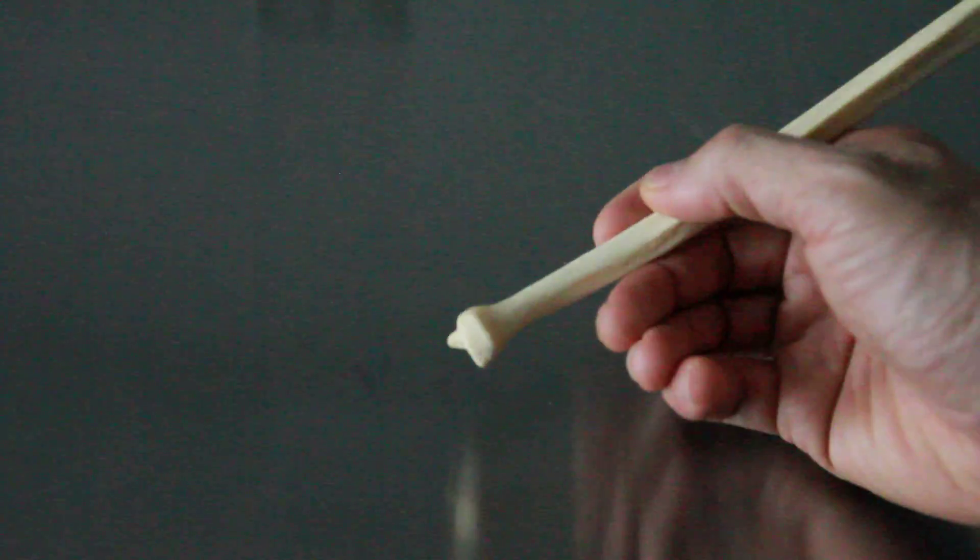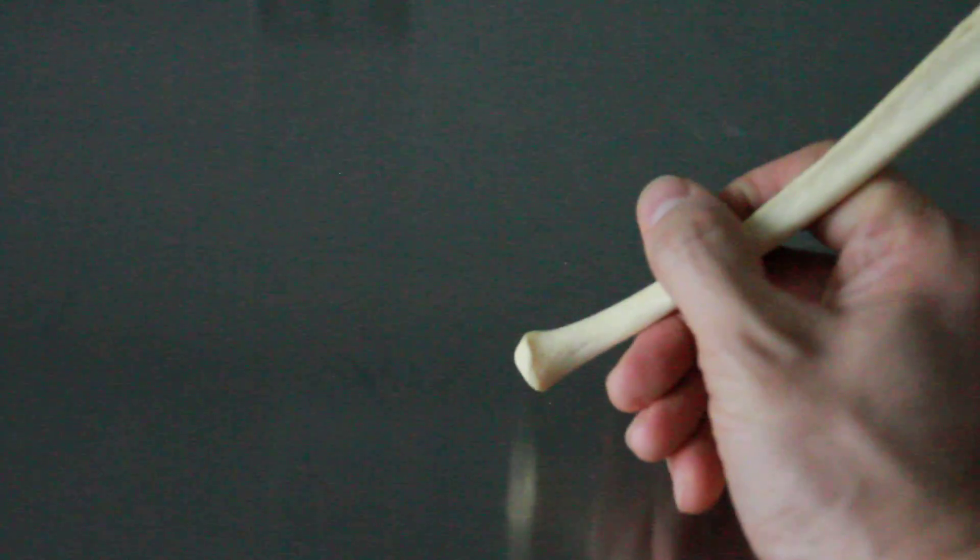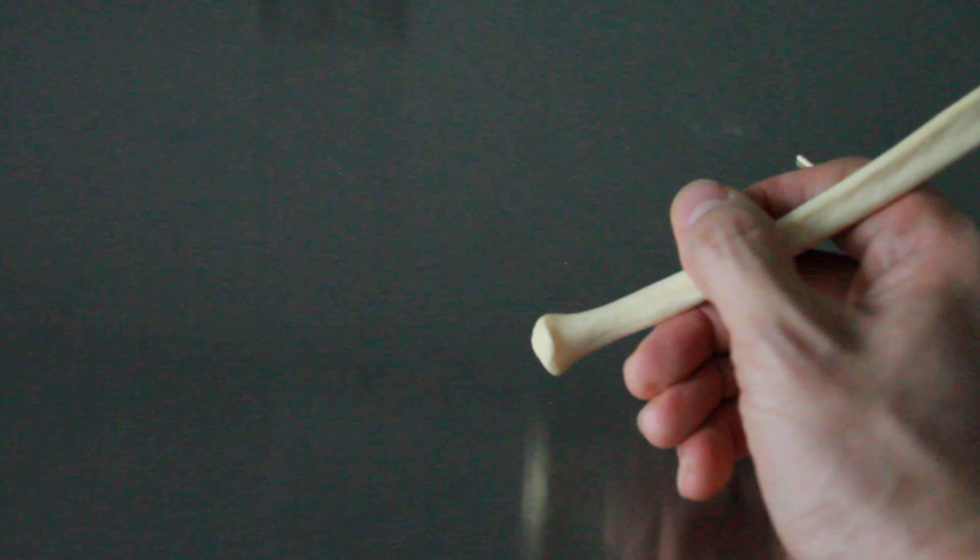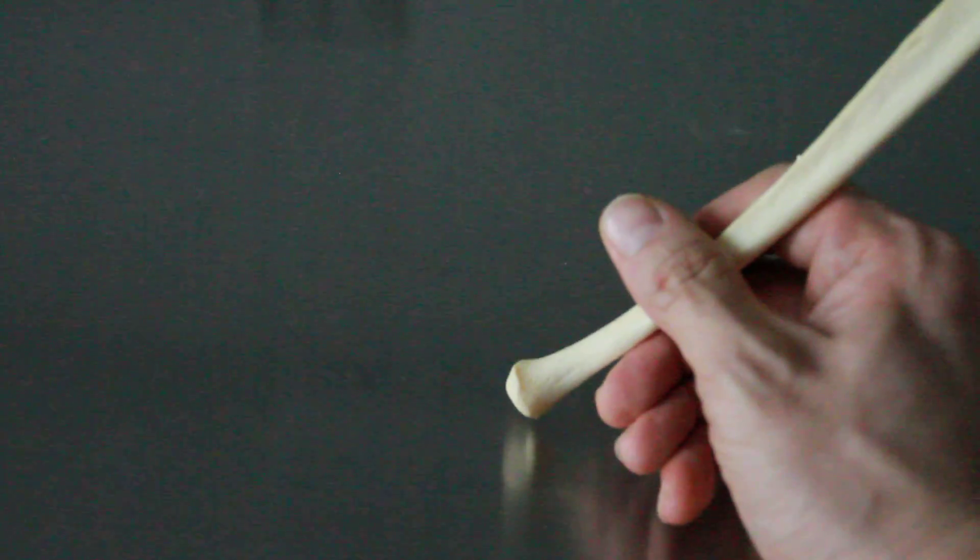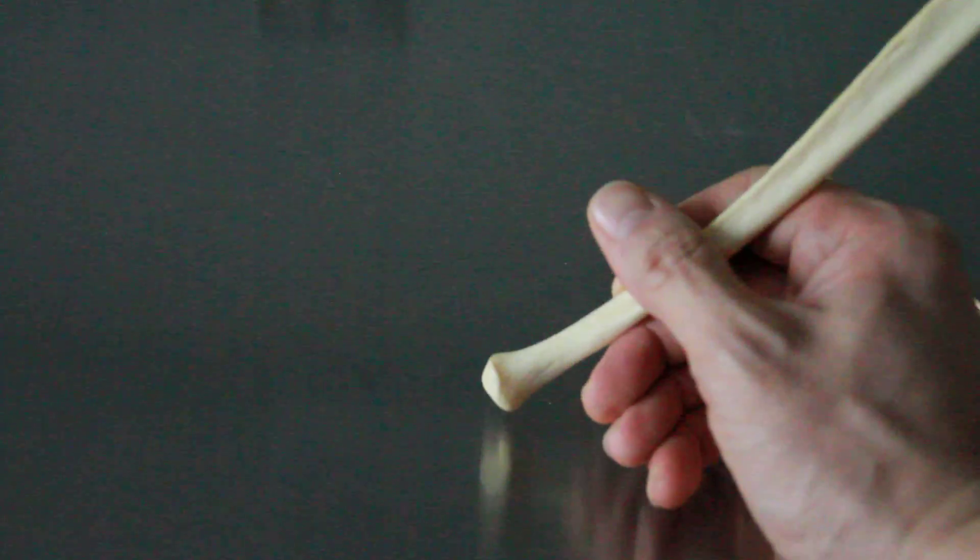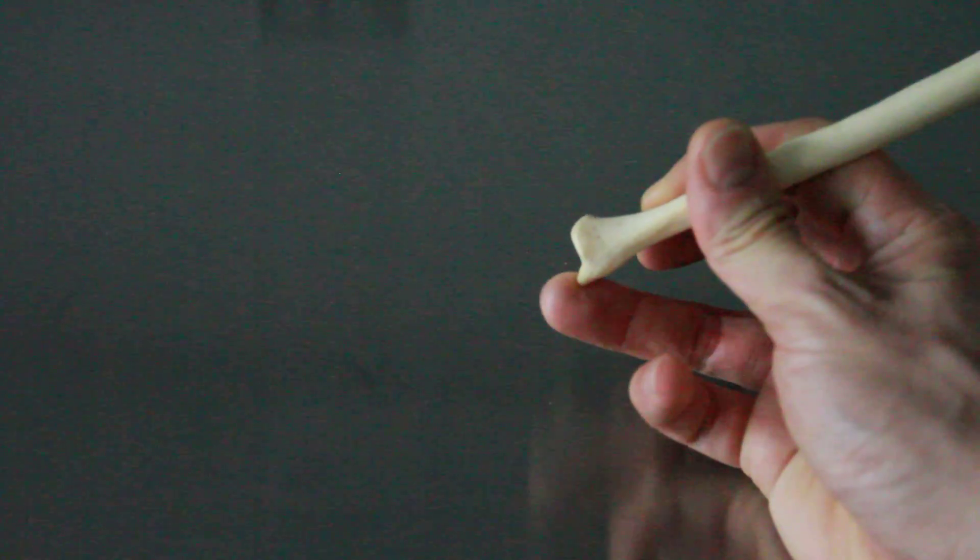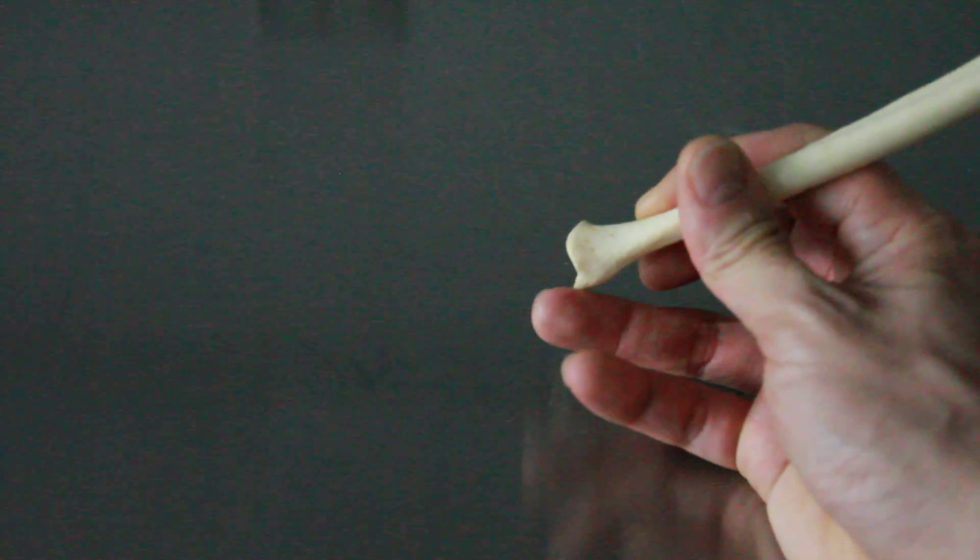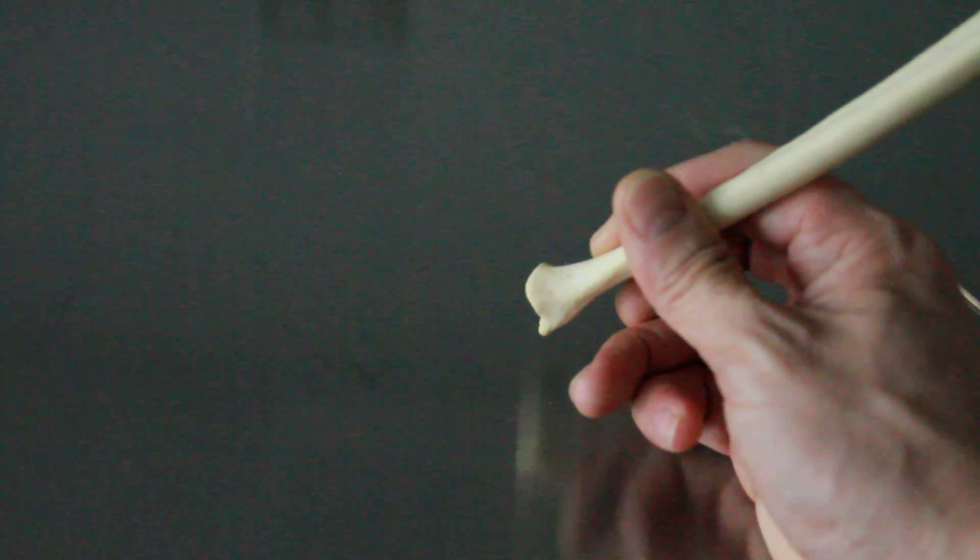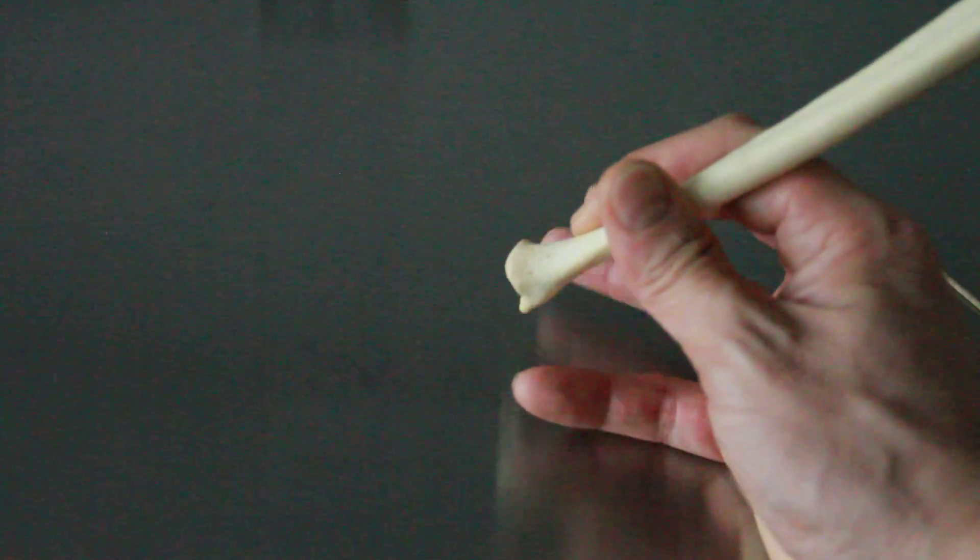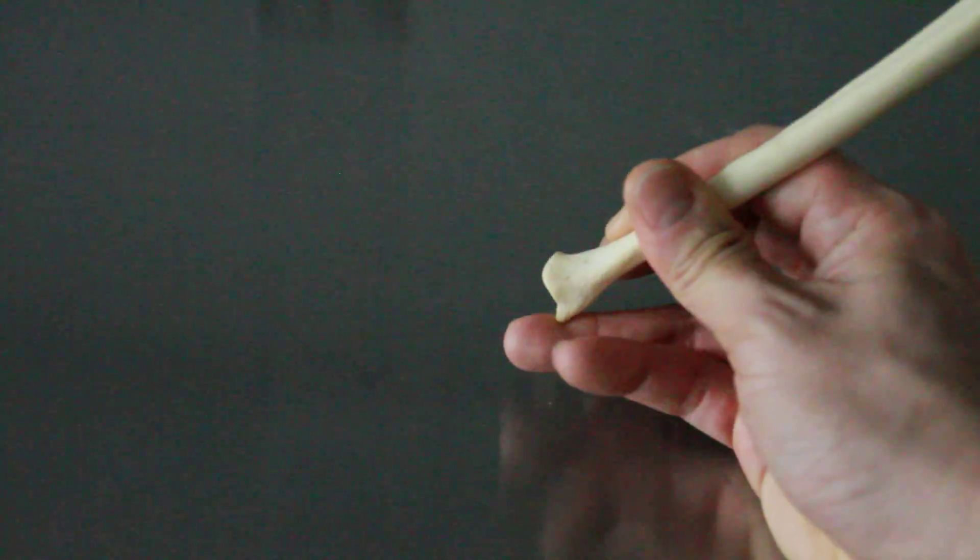Styloid meaning something that you would write with, like a stylus for your iPad or any other type of electronic device - your tablets, your Kindle, your Palm Pilot, whatever it is. You take this stylus and you write with it. That is the styloid process of the ulna, and you have to be specific - styloid process of the ulna - otherwise people will think it's styloid process of the radius or styloid process of the temporal bone.